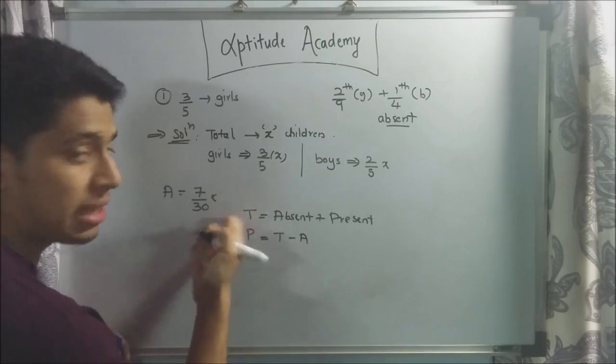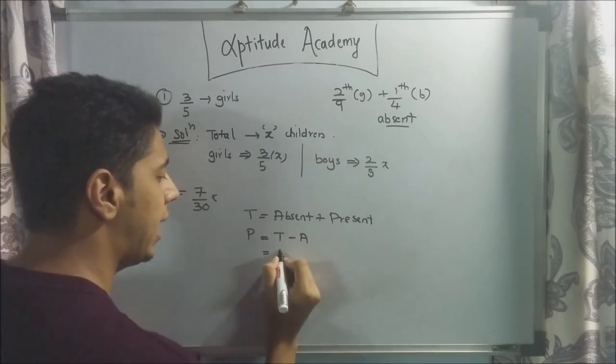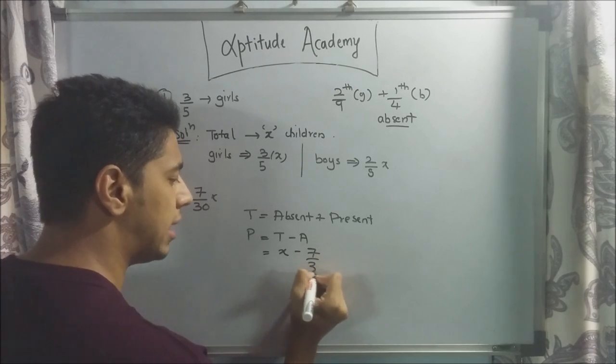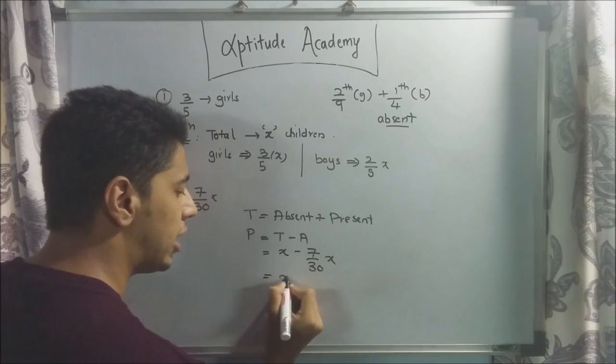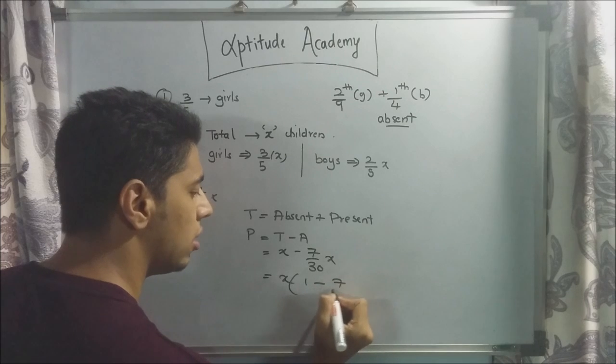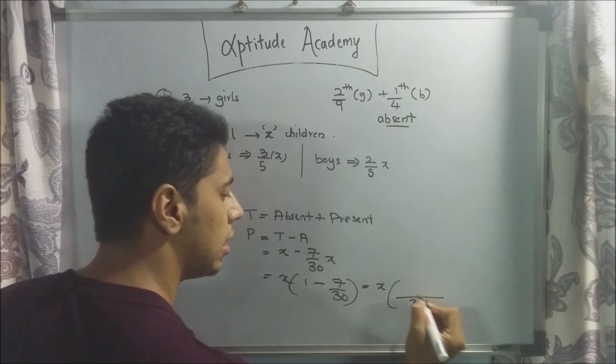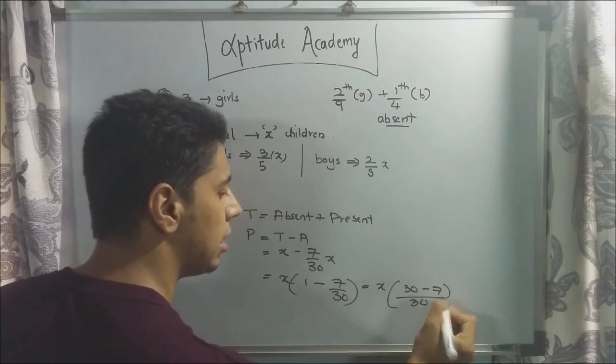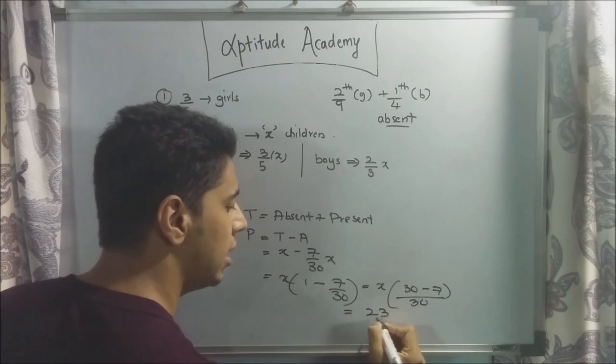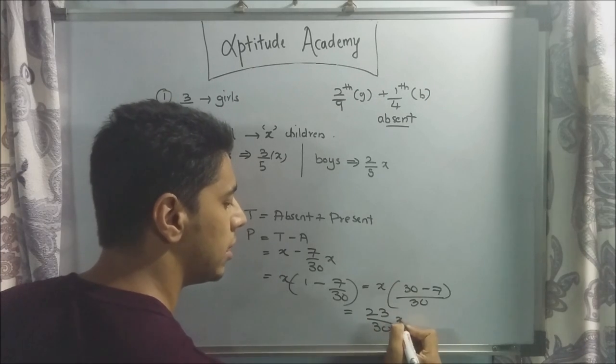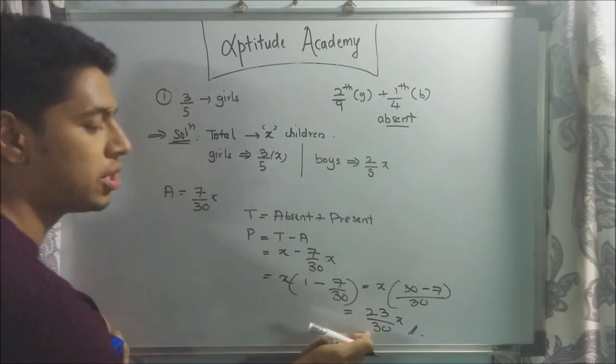Total is x. Absent is 7/30 x. So just substitute it. x minus 7/30 x. x would be common. 1 minus 7/30. LCM is 30. 30 minus 7. So is equal to 23/30. This is the number of children that are present.